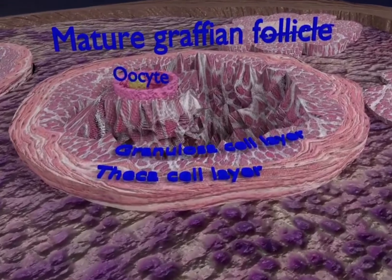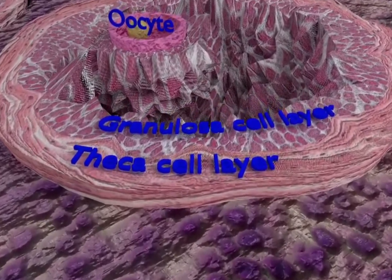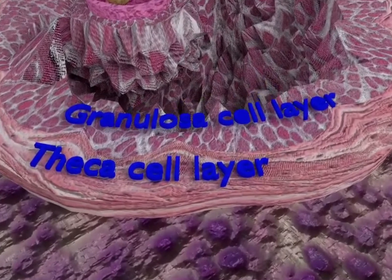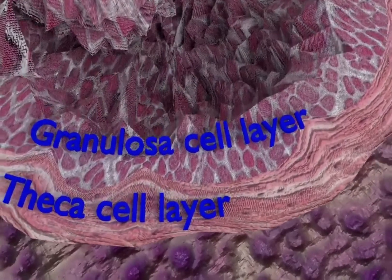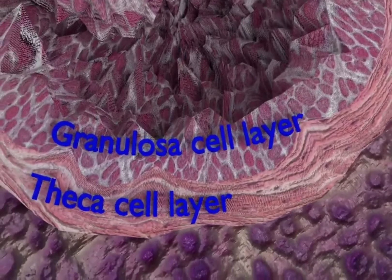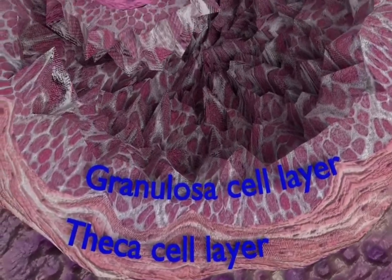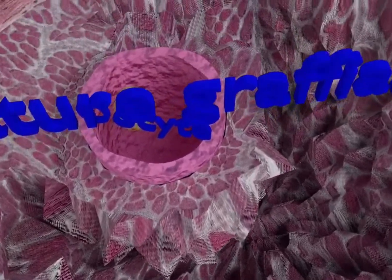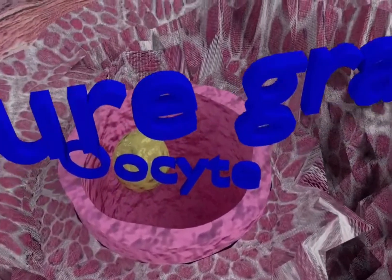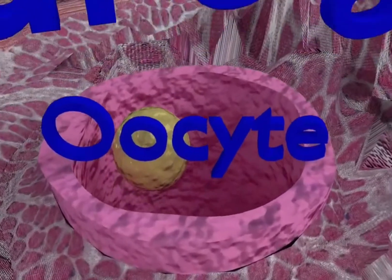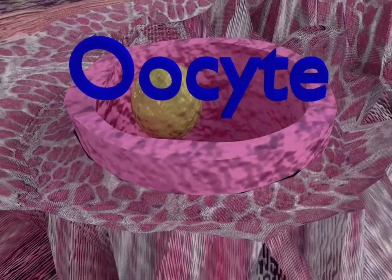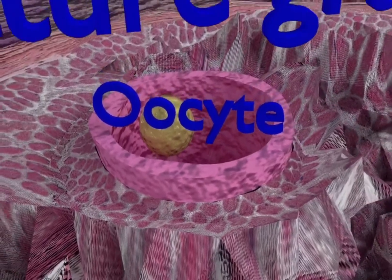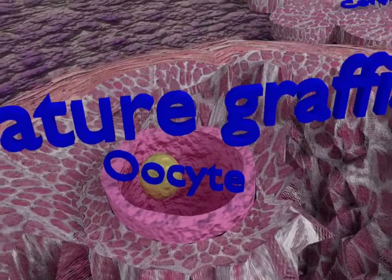The outer theca layer is further divided into theca externa and theca interna, which secretes estrogen. The granulosa cell layer surrounds the secondary oocyte, which is located eccentrically and is surrounded by a non-cellular layer of zona pellucida by the vitelline membrane of the oocyte.